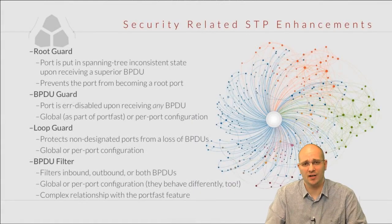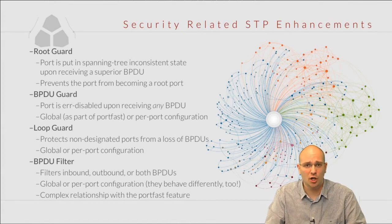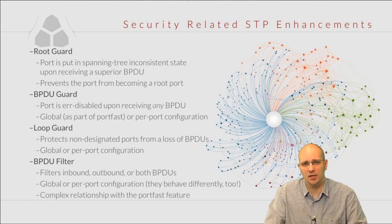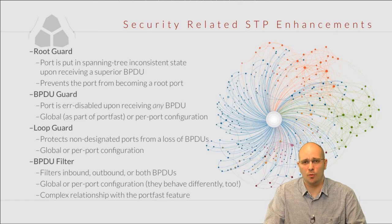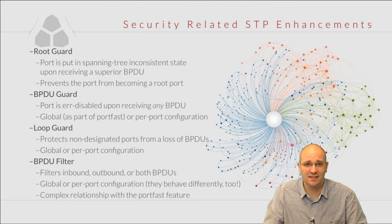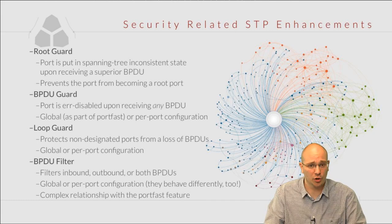Security related Spanning Tree enhancements include features like the root guard, the BPDU guard, loop guard and the BPDU filter. I should point out that security should be taken here in the broadest possible terms. Some of these are more like precautionary features that are designed to prevent bad things from happening in the network, and not necessarily protect the network from some sort of an attack — which might be an implicit understanding of the word security in this context.